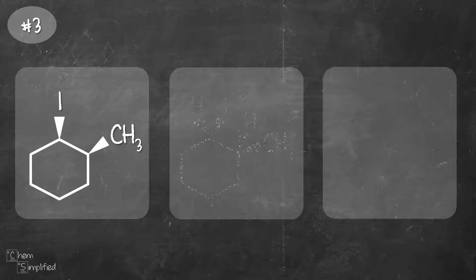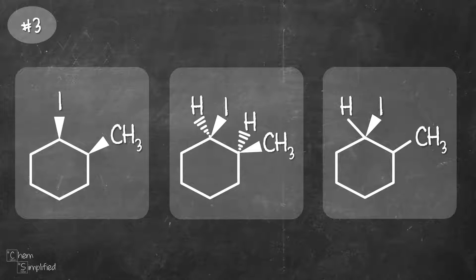Last example, we have cyclohexane ring with iodine and methyl group. The first structure, it's fine. Sometimes we don't have to draw out all the bonds containing hydrogen. It is understood that it's there even though we don't draw it out.